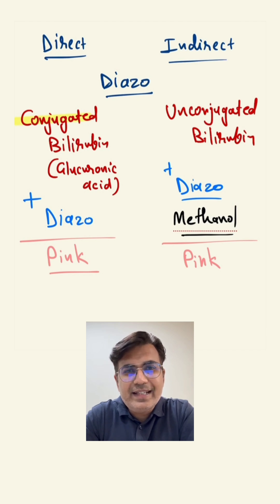Conjugated bilirubin directly reacts with diazo reagent and gives pink color, so it is called direct bilirubin. Unconjugated bilirubin reacts with diazo only in presence of methanol and gives pink color, that is why it is called indirect bilirubin.